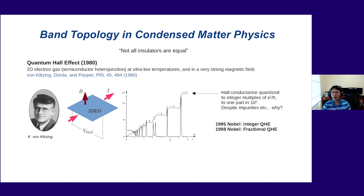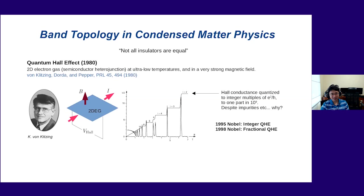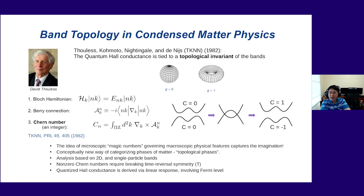Not only is the Hall conductance quantized, but the actual numerical values are accurate to one part in 10⁹ — which is amazing because e and h are fundamental constants of the universe, and yet here you have a macroscopic solid-state sample with extreme levels of impurities, and when you perform this measurement you get an integer multiple of e²/h. Why could this possibly be? The exploration of this led to Nobel Prizes: in 1985 to von Klitzing for the integer quantum Hall effect, and later in 1998 for the fractional quantum Hall effect.